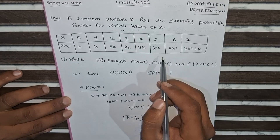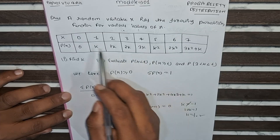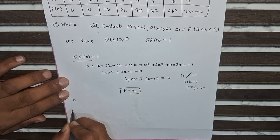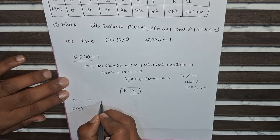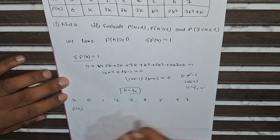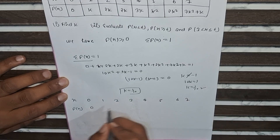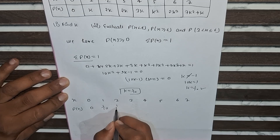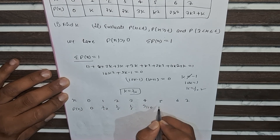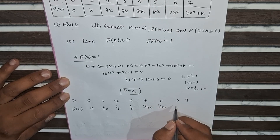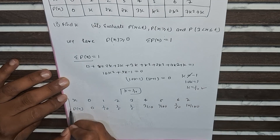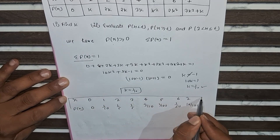Substituting k = 1/10 back into the table, the probability values for x = 0, 1, 2, 3, 4, 5, 6, 7 are respectively: 0, 1/10, 1/5, 1/5, 3/10, 1/100, 1/50, and 17/100.